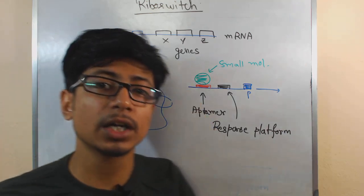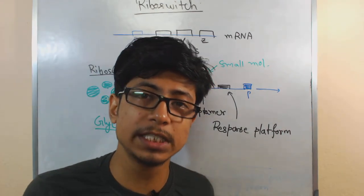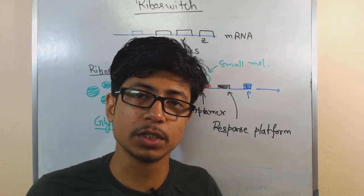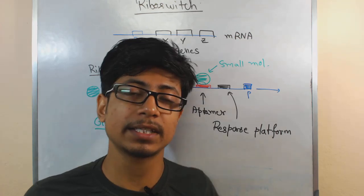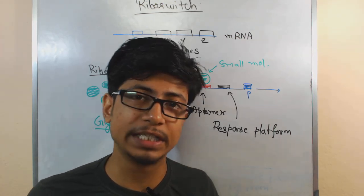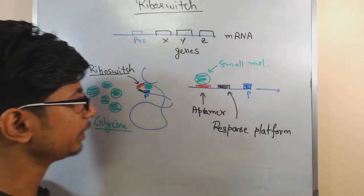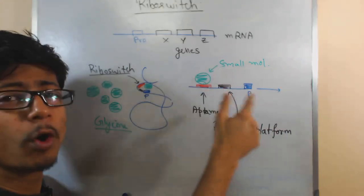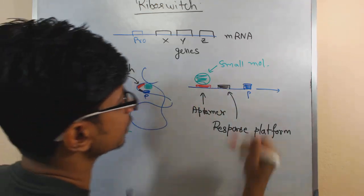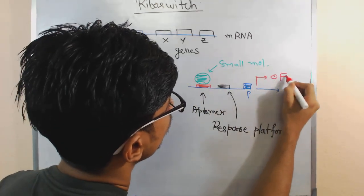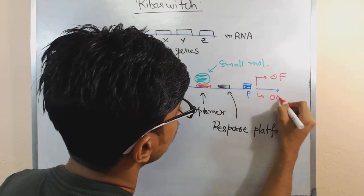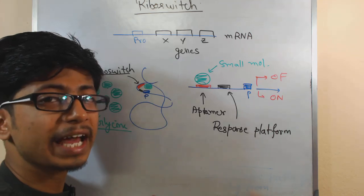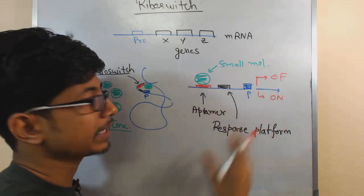The riboswitch can interact with small molecules and control the expression of genes within itself, so the mRNA can control the expression of genes by itself — not by the secretion of a protein or by the function of DNA, but by itself alone. That's why the riboswitch is important and why it's called a riboswitch: it acts as an on/off switch for gene expression, depending on how the response platform rearranges and makes it happen.